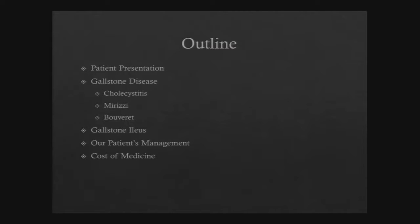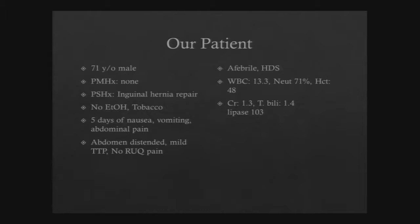Our patient is a 71-year-old male with really no significant past medical history, though he had not seen a physician in many years. He had had an inguinal hernia repair in the past, denied any alcohol or tobacco use, but he presented with five days of nausea, vomiting, and abdominal pain. He was distended, just very mildly tender, really no specific right upper quadrant pain. He was afebrile, hemodynamically appropriate. His white blood cell count was a little bit elevated, with slightly elevated creatinine and bilirubin.